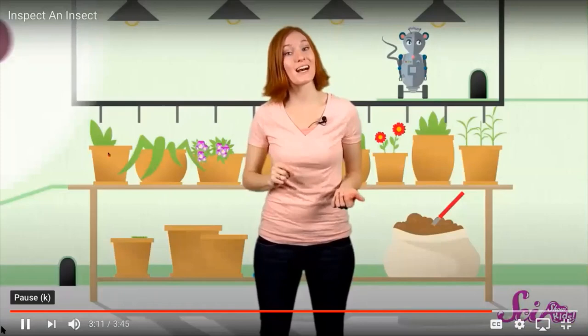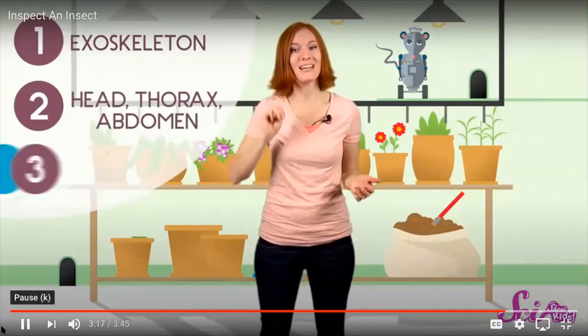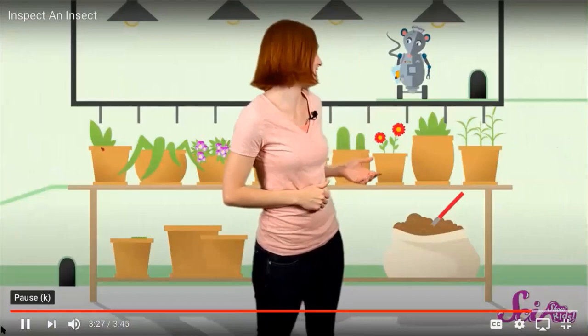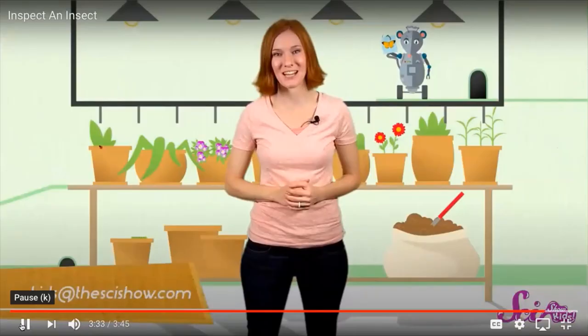One, it has an exoskeleton. Two, its body is divided into a head, thorax, and abdomen. And three, it has six legs. So the next time you see a fly, or a bee, or an ant, stop and take a closer look and see if you can find what makes an insect an insect. What's your favorite kind of insect? Let us know your favorite too, and we'll see you back here next time on SciShow Kids.